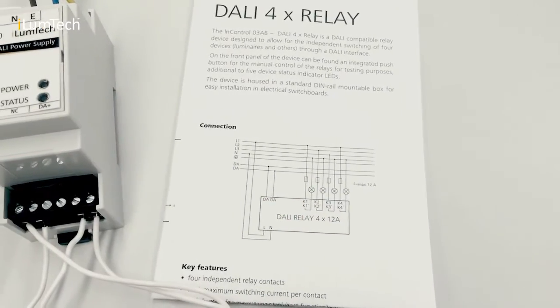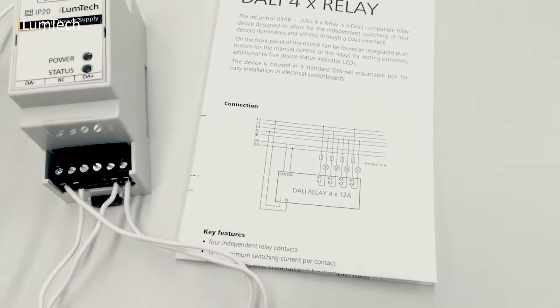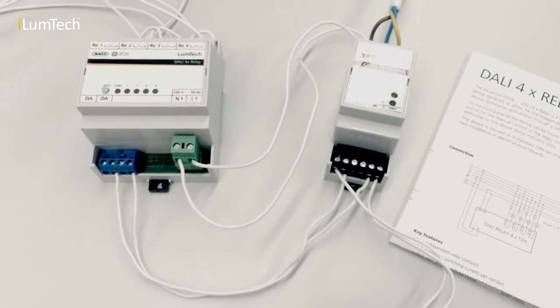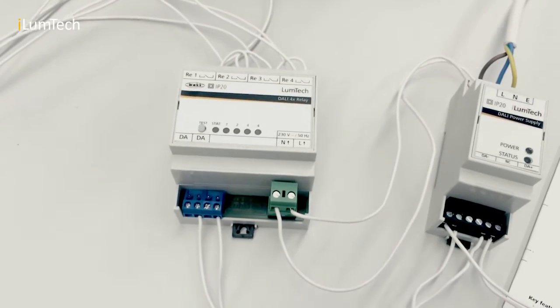To ensure correct wiring, please follow the connection diagram. Before carrying out the wiring, disconnect all wires from the power supply, especially those for mains voltage. Connect the wires for the DALI bus, main supply and relay contacts.